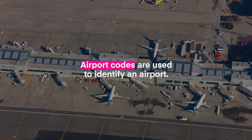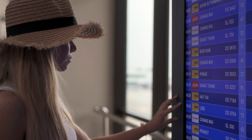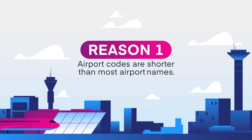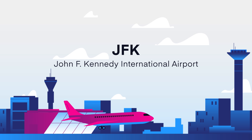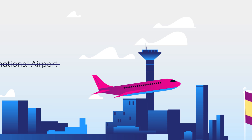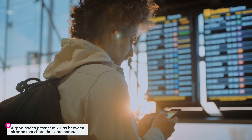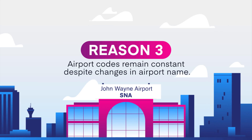We'll get into why there are so many different types of airport codes later, but first, let's discuss why they exist. In a nutshell, airport codes are used to identify an airport. So why don't we just use the airport name instead? Well, there are three main reasons. First, airport codes are much shorter than the actual airport name — it's much easier to say JFK than John F. Kennedy International Airport. Second, airport codes avoid language barriers and difficult airport names, and they prevent mixing up airports that share the same name. And third, an airport code stays the same even if the name of the airport changes.